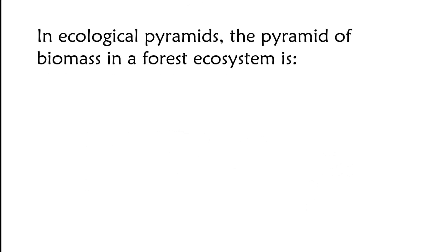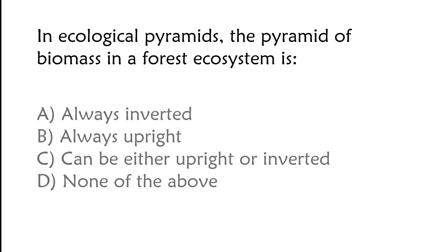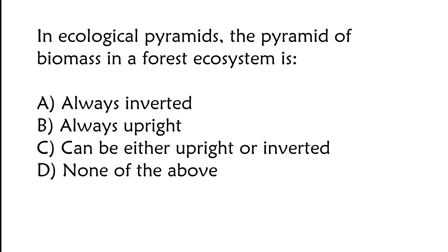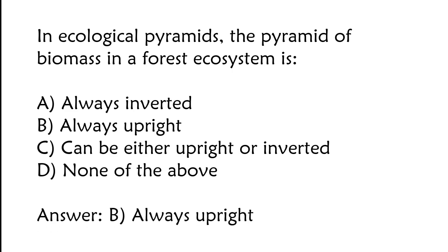In ecological pyramids, the pyramid of biomass in a forest ecosystem is: A) always inverted, B) always upright, C) can be either upright or inverted, D) none of the above. The correct answer is option B, always upright.